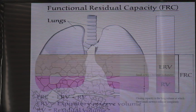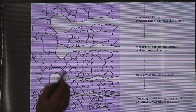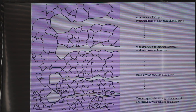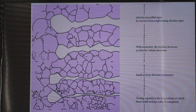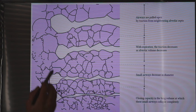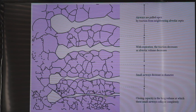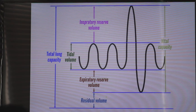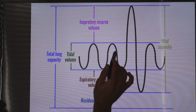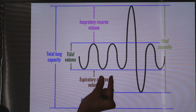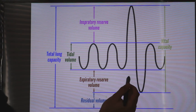With age, the tissue around the alveoli will be destroyed, and will not support the alveoli as much as when the person was young. So the alveoli will close at smaller volumes. As the person gets older, the closing capacity increases — meaning alveoli begin closing at higher lung volumes, closer to the normal tidal range.